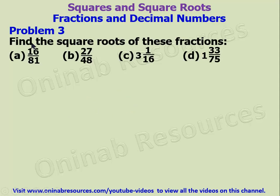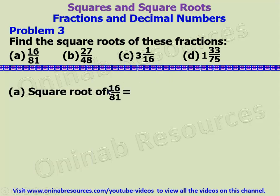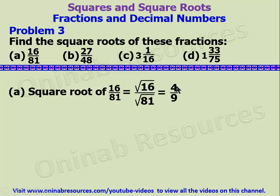Now we go to problem 3. In problem 3 we have to find the square root of these fractions — 4 problems: A, B, C, D. Starting with A: the square root of 16 over 81 is the square root of 16 over the square root of 81. The square root of 16 is 4, and the square root of 81 is 9. So the answer is 4 over 9.